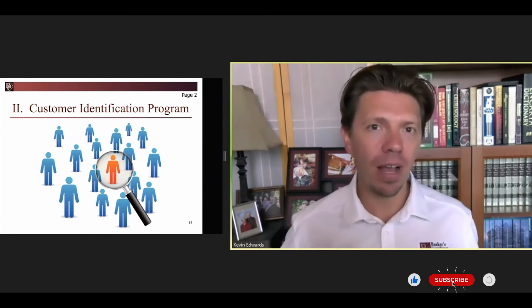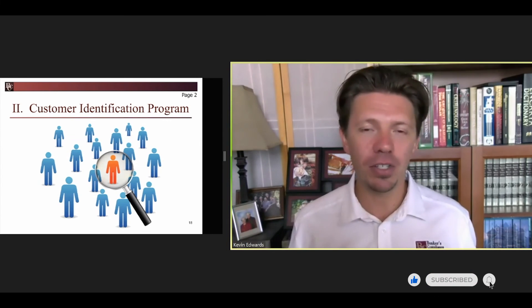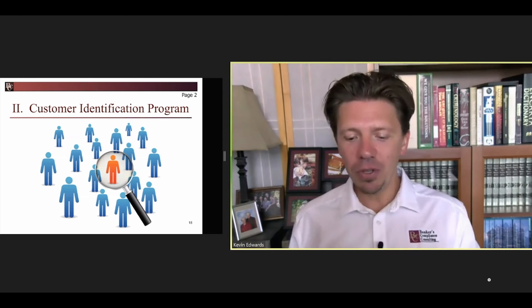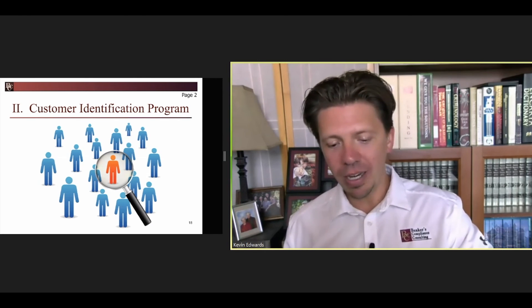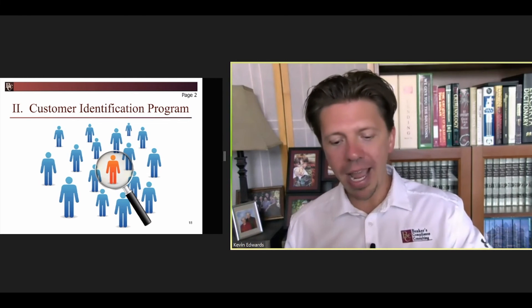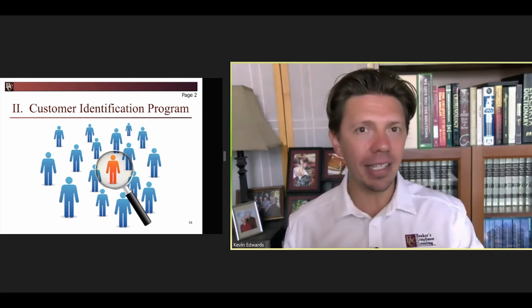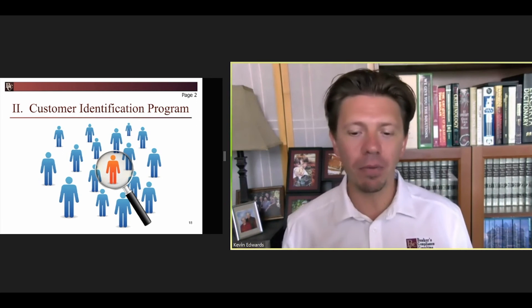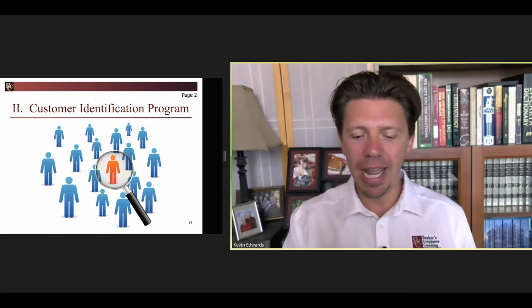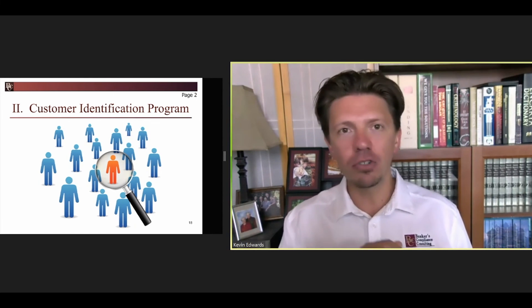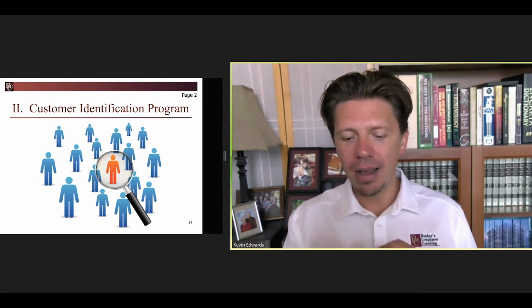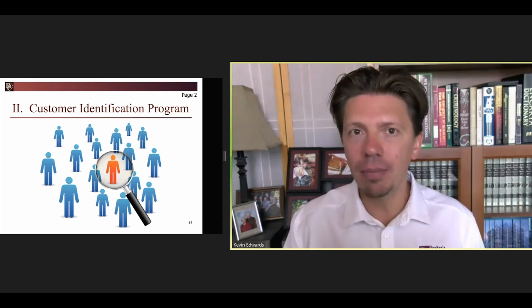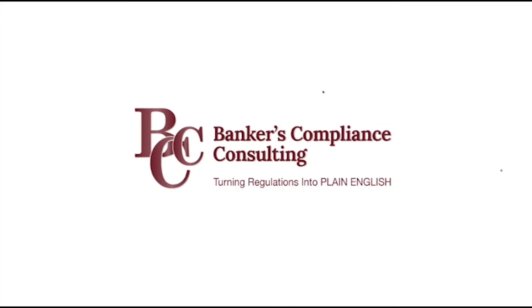If you look at number A1, I give you at least these four bits of information: my name, physical address, date of birth, and tax ID number.